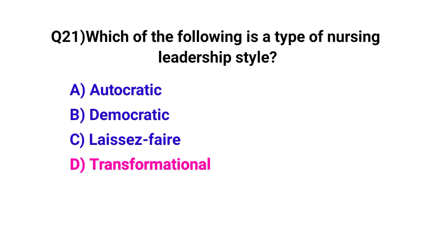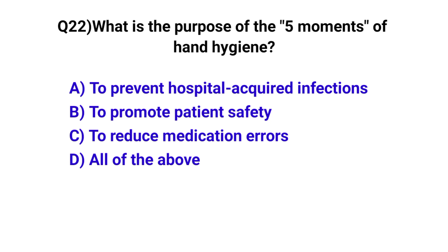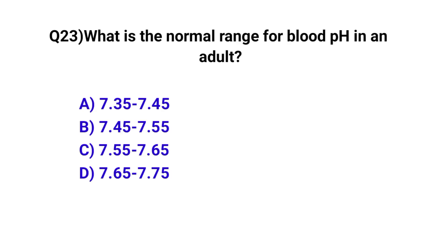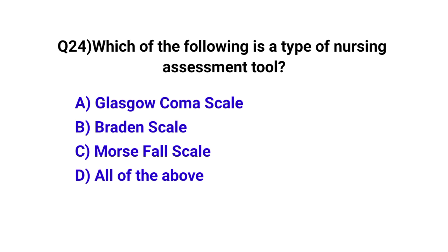Question number twenty-two: what is the primary purpose of nursing? The correct option is B, to promote patient safety. Question number twenty-three: what is the normal range for blood pH in adults? The correct option is A. Question number twenty-four: which of the following is a type of nursing assessment tool? The correct option is D, all of the above.